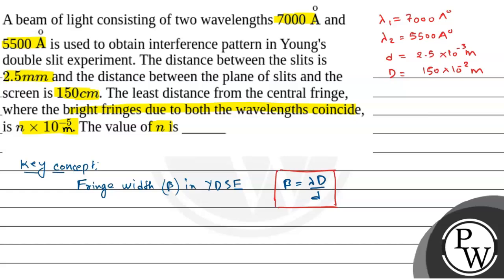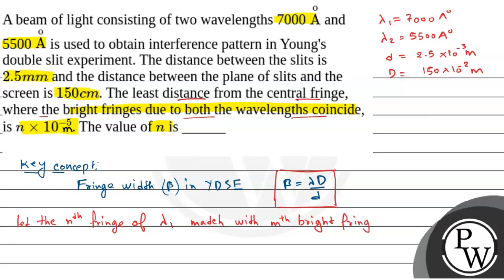The question asks us to find the least distance from the central white fringe where the bright fringes due to both wavelengths coincide. Let the nth bright fringe of λ1 match with the mth bright fringe of λ2. According to this condition: n × β1 = m × β2, where β1 is the fringe width for the first wavelength and β2 is the fringe width for the second wavelength.